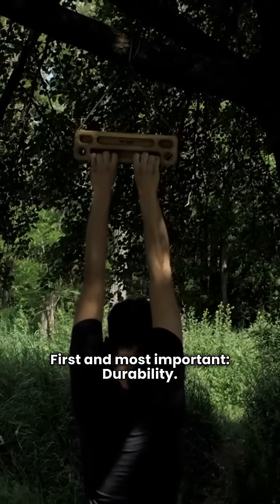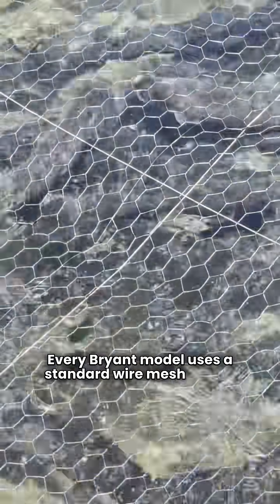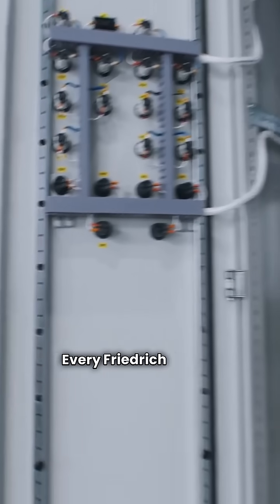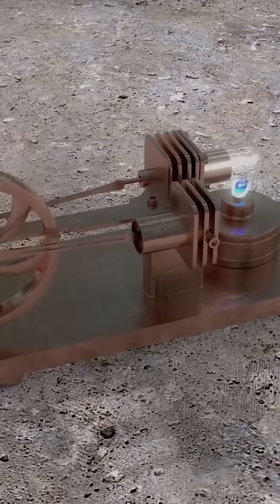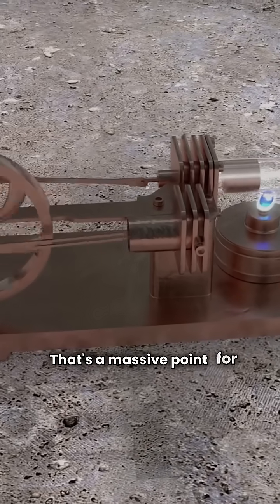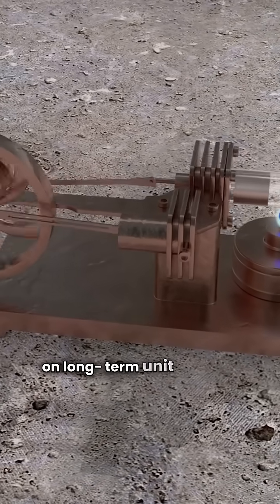First and most important, durability. Every Bryant model uses a standard wire mesh guard. Every Friedrich model, however, uses a louvered panel construction. That louvered coil offers superior protection from flying debris. That's a massive point for Friedrich on long-term unit integrity.